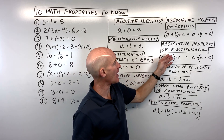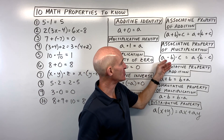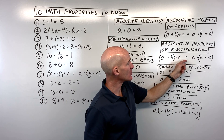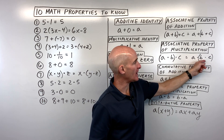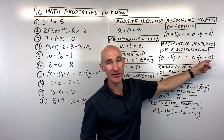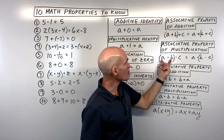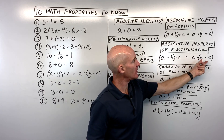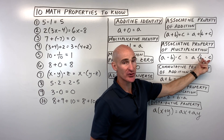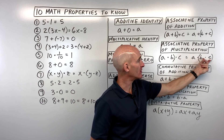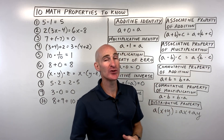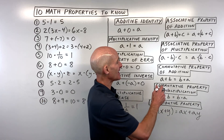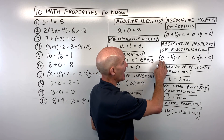There's also an associative property of multiplication. The quantities are in the same order — a, b, c — but here we're grouping the first two, and here we're grouping the last two. It doesn't matter which ones you multiply first; you're going to get the same result in the end.